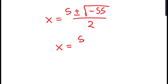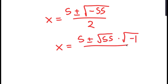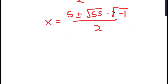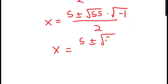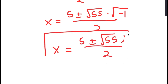This is equal to the square root of 55 times the square root of negative 1, all over 2. Since the square root of negative 1 is the imaginary number i, I get 5 plus or minus the square root of 55 times i, over 2. So these are two more solutions to this equation.